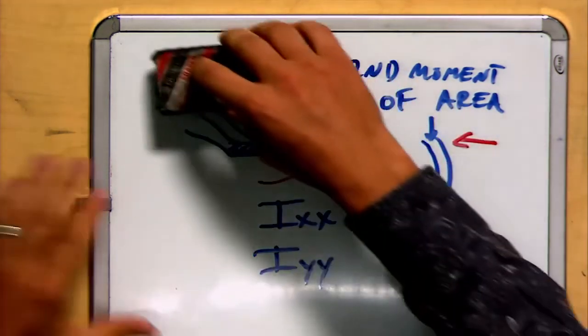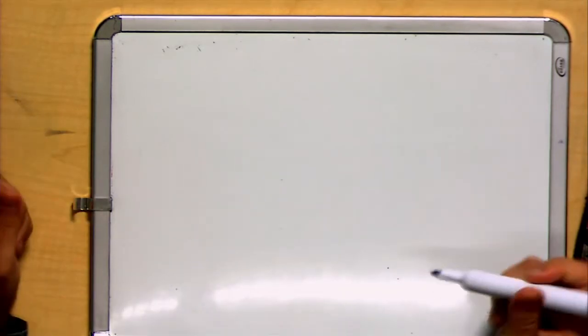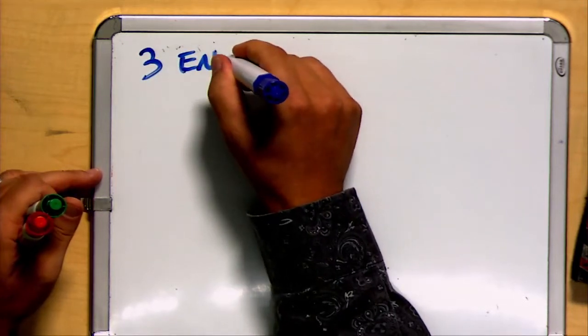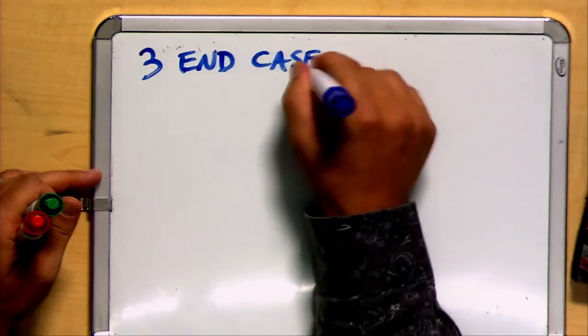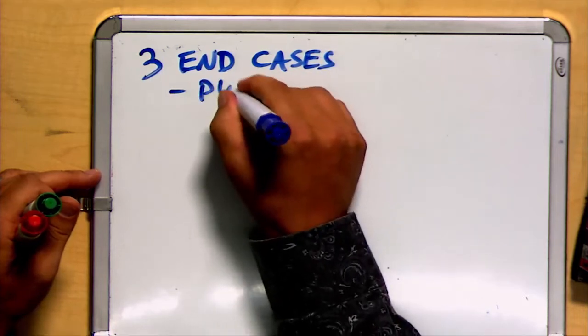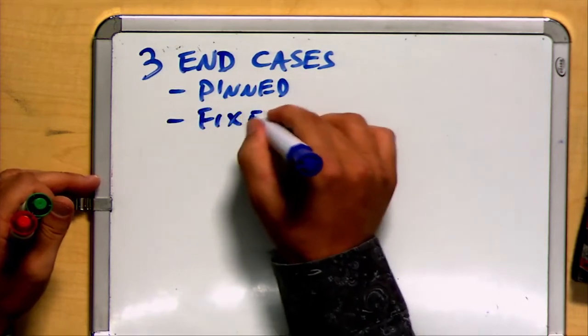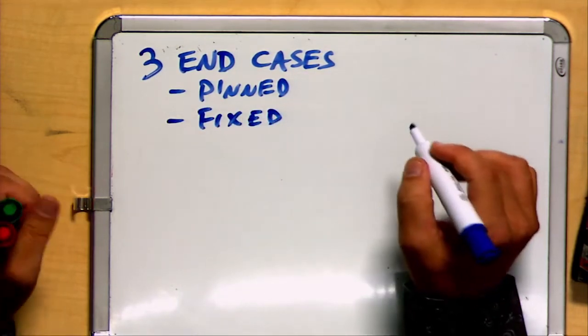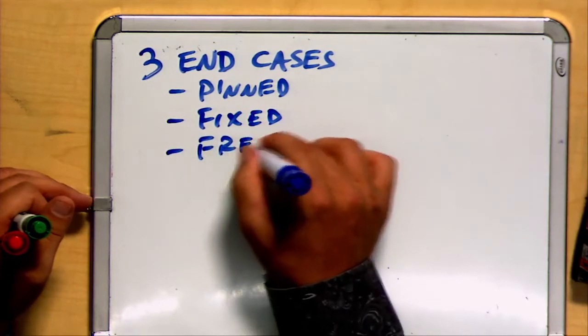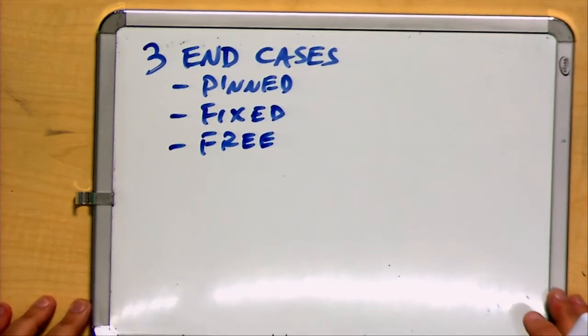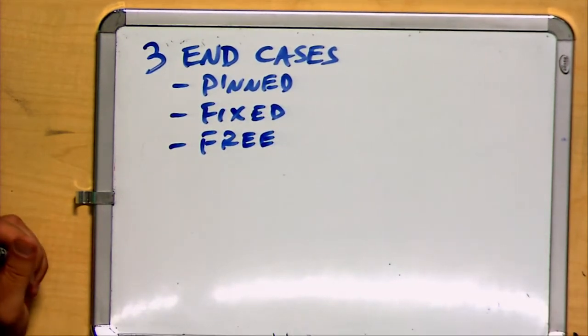Here are the relationships. We have three possible end cases, three ways that we can actually leave the ends of the column. They can be pinned, allowed to rotate freely. They can be fixed, not allowed to rotate freely, and held in place, or they could be free, in which case they are neither pinned or fixed, but allowed to move in space and there's no reaction forces.